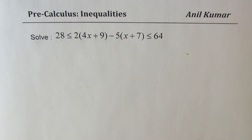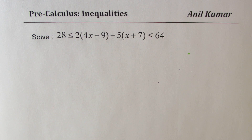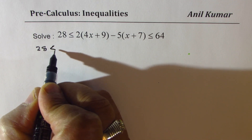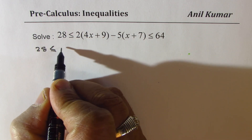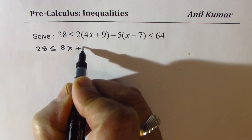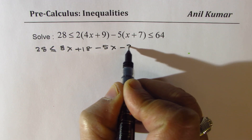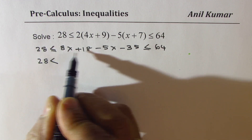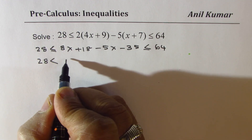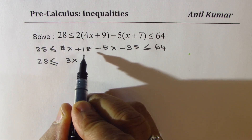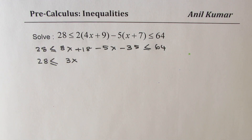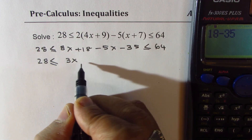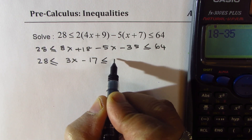Now let's do the double inequality, question C. These questions are relatively straightforward — you just need to expand and simplify. Open the brackets: you get 8x + 18 - 5x - 35 in the center. Simplify: 8x - 5x = 3x, and 18 - 35 = -17. So we have 28 ≤ 3x - 17 ≤ 64.